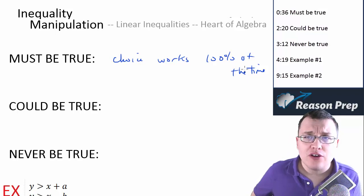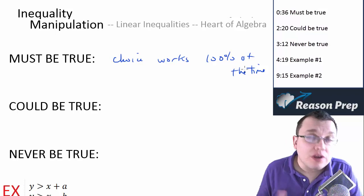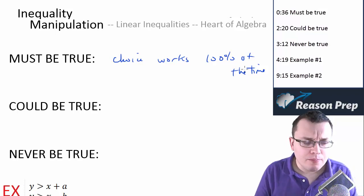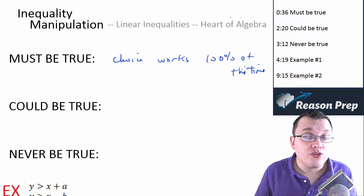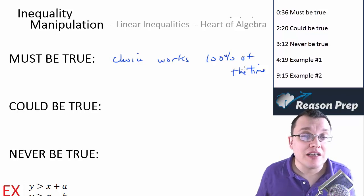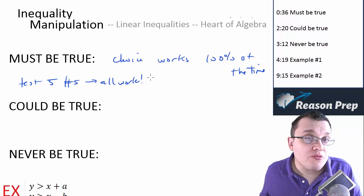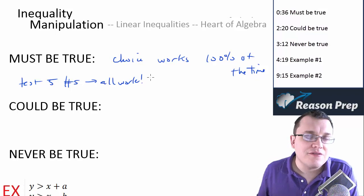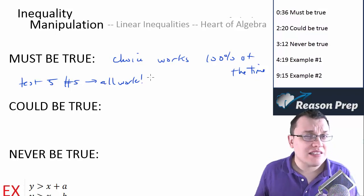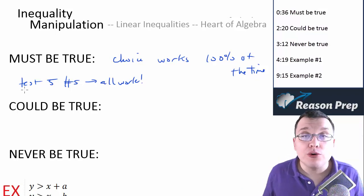If you're able to prove with algebra that a statement must be true, that's a really secure way to make sure you're getting the answer right. If you decide to plug in numbers and test some possibilities, let's say you test five numbers and they all work — that's no proof it's always going to be true. Just because five cases worked doesn't mean it works for every single number.